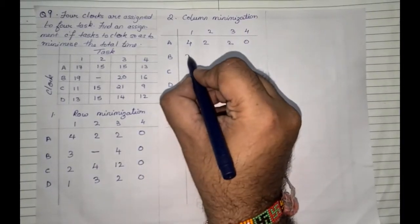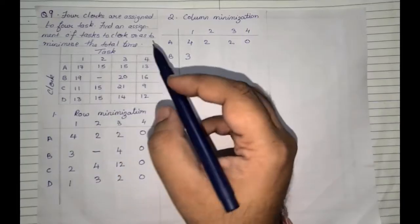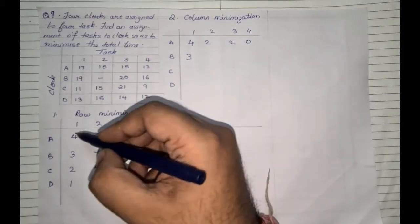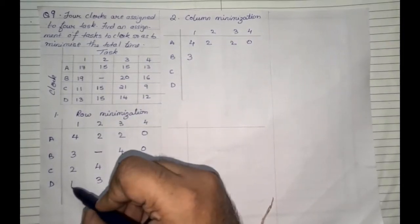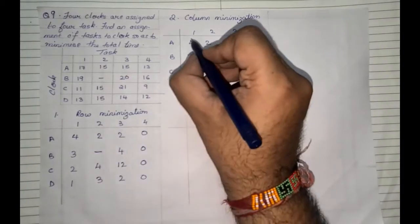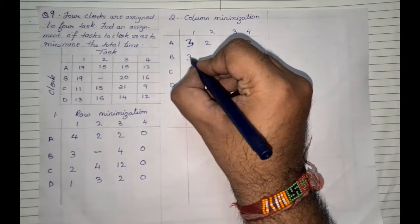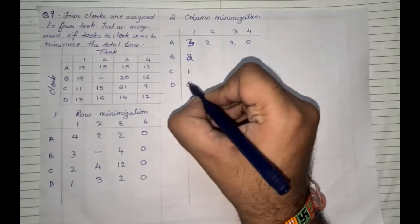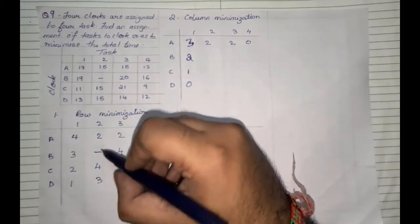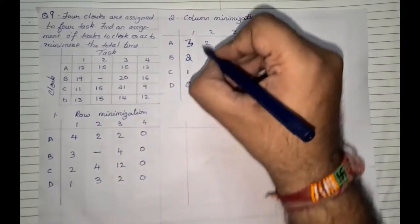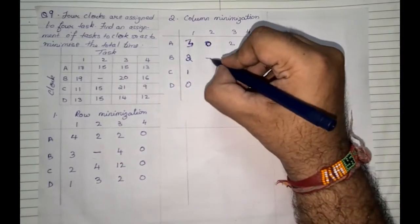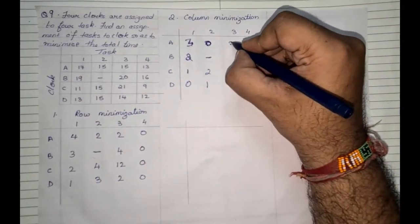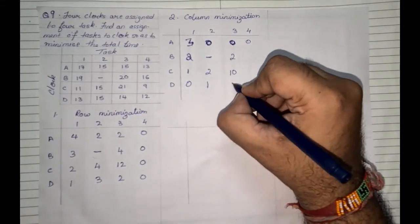Going column wise: in the first column — 3 minus 1 is 2, 2 minus 1 is 1, 1 minus 1 is 0. In the second column, ignore the prohibited value; the lowest is 2, so 2 minus 2 is 0, dash, 4 minus 2 is 2, and 1. In the third column, the lowest value is 2, so that becomes 0, then 2, 10, and 0. In the last column all values are 0 so they remain as 0.